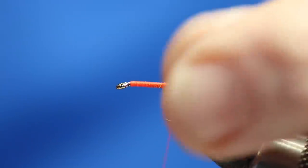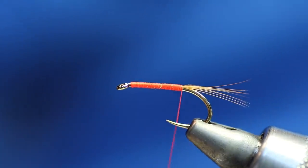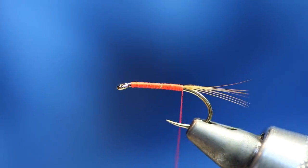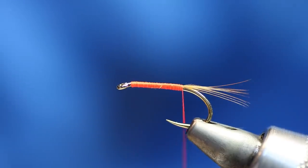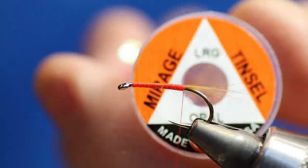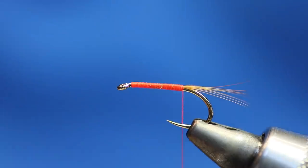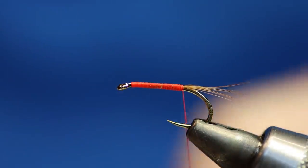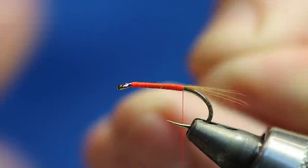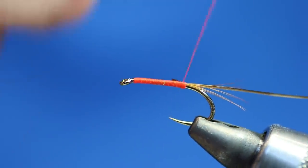We do need one other material for this fly. We do need mirage, large opal. On a size 10 I'll use large. On a 12 and below I'll obviously use medium. So I'm just going to cut off that little bit at the end and tie in the strip quill. I've already pre-stripped this using a rubber.